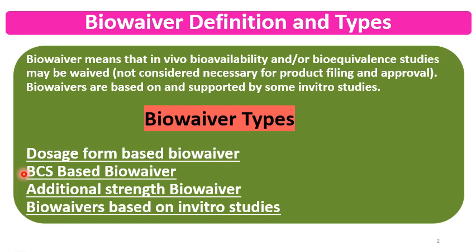The third type is additional strength BioWaivers, which are given to strengths other than the bioequivalence study strength. The fourth type is BioWaivers based on in-vitro studies. These are given to products which have local action in the GIT and products that may not get absorbed into the systemic circulation.